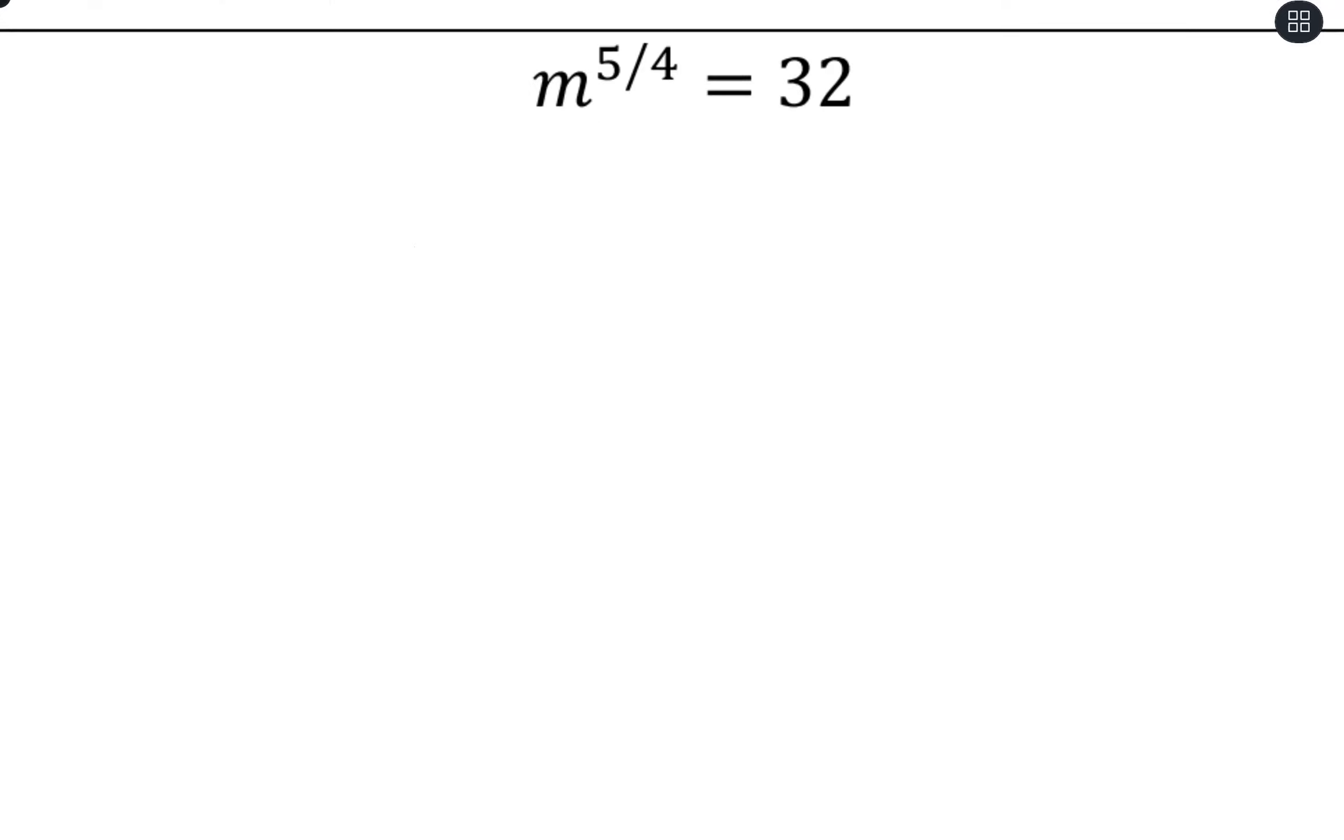So I'm going to spread this out a little bit. I have m to the 5 fourths. In fact, let me go ahead and write this like 5 over 4 and then equals 32. Now, we need to hold our property that when solving equations, whatever we do to one side, we also do to the other side. So that still holds true.